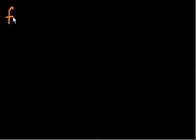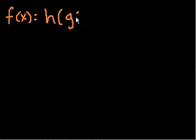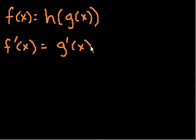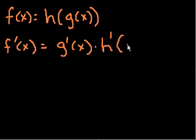Now that you've seen some examples of the chain rule in use, I think the actual definition of the chain rule might be more digestible. So let me give you the actual definition. Let's say I have a function f of x, and it equals h of g of x. The chain rule says that the derivative of f of x, or f prime of x, is equal to the derivative of the inner function, g prime of x, times h prime of g of x — not just h prime of x, but h prime of g of x.